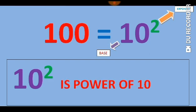Here 100 is written 10 raised to the power 2. So 2 is exponent, 10 is base, and this whole term which is written here, 10 raised to the power 2, this whole is actually the power of 10.